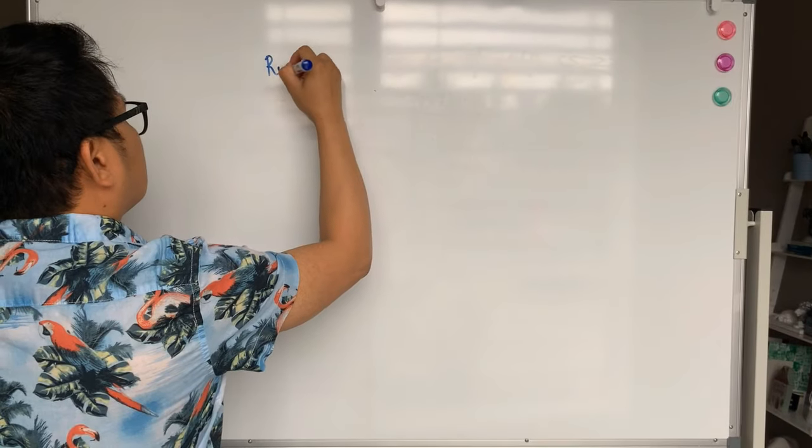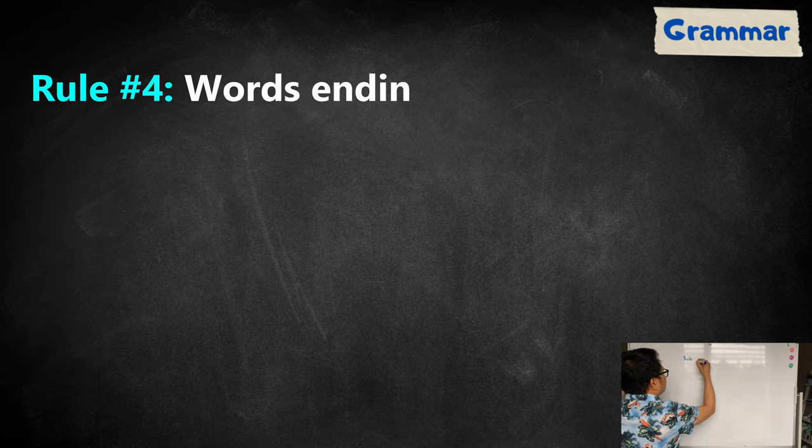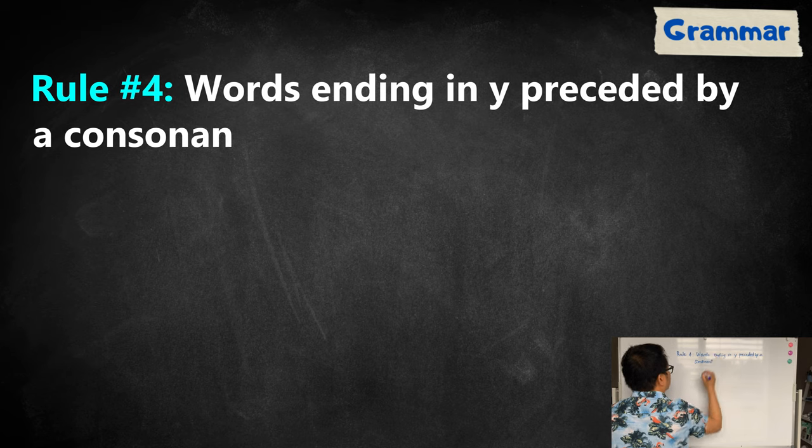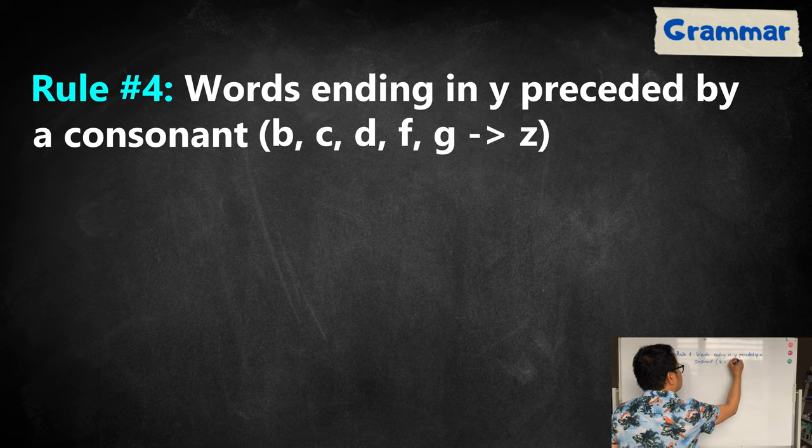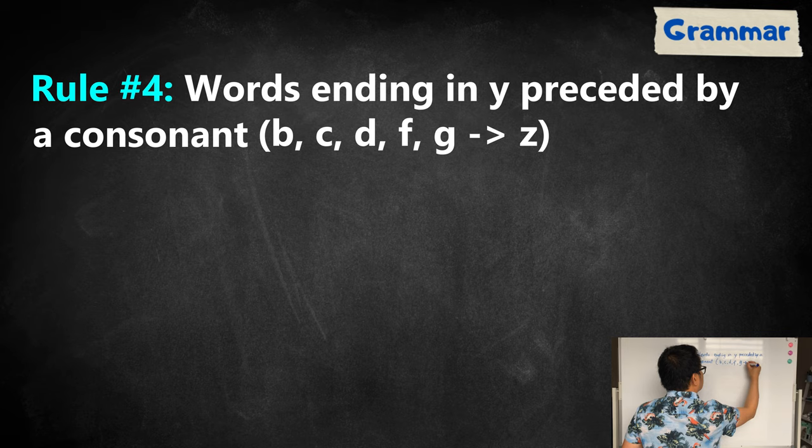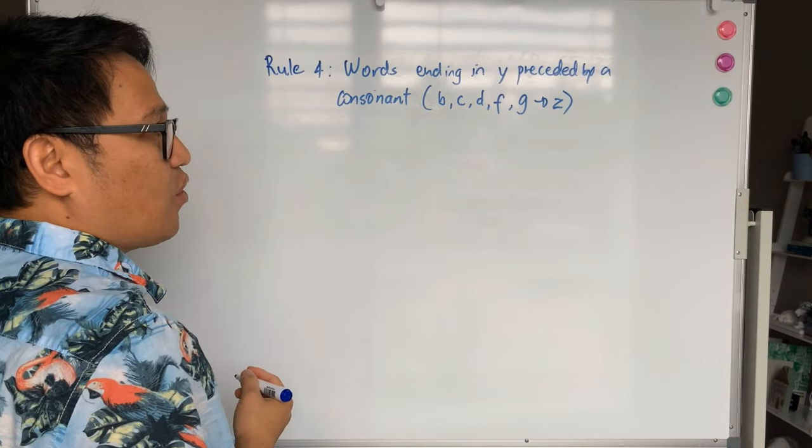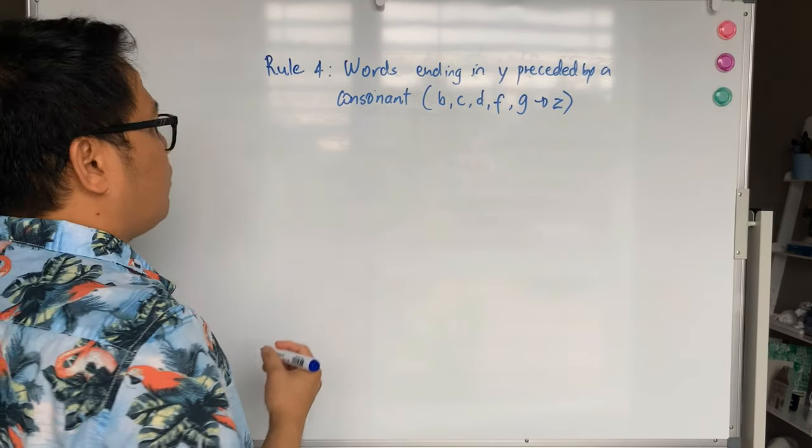The fourth rule is for words ending in Y preceded by a consonant. When you say consonant, these are B, C, D, F, G until you reach Z, except A-E-I-O-U because those are vowels.